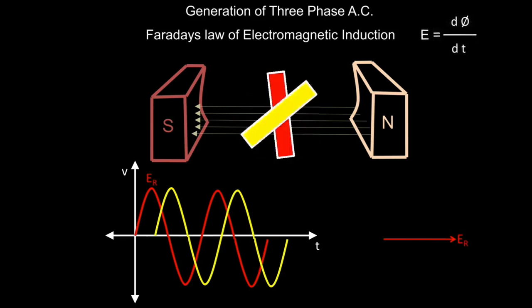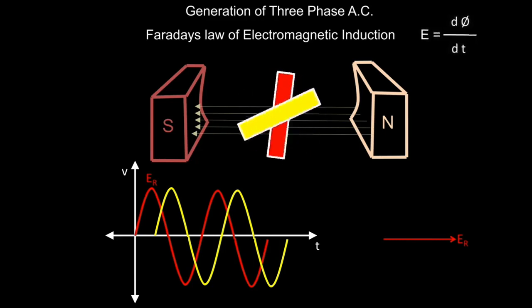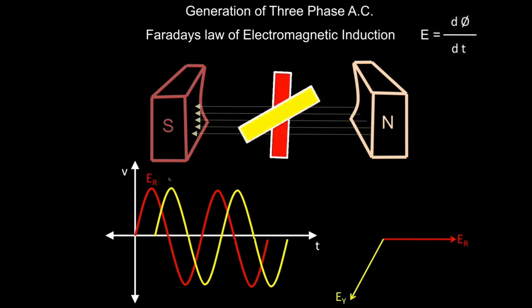Because we kept the yellow conductor 120 degrees apart from the red conductor, there is a phase angle difference of 120 degrees between these two conductors. So we are having a second sinusoidal variation but starting from 120 degrees. Drawing its phasor, it is lagging by 120 degrees. Let it be EY — the EMF induced in the yellow conductor.